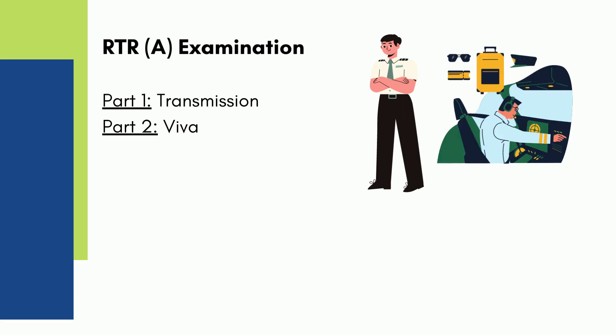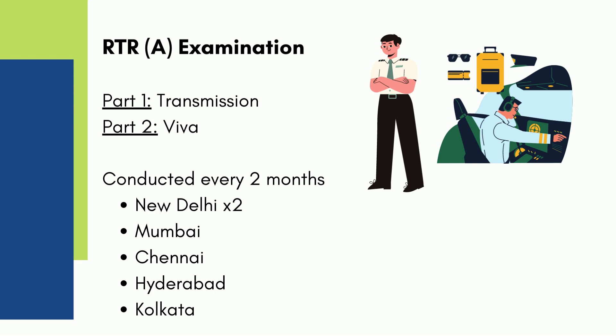DGCA does not issue an AME license if the candidate does not have an RTR license. The exam is conducted every two months in a year at six centers, which are New Delhi (two times), Mumbai, Chennai, Hyderabad, and Kolkata. The exam fee is INR 500.